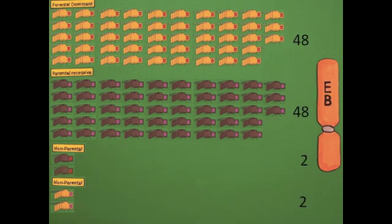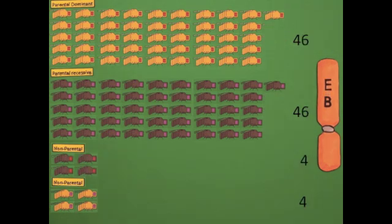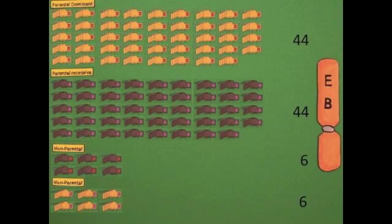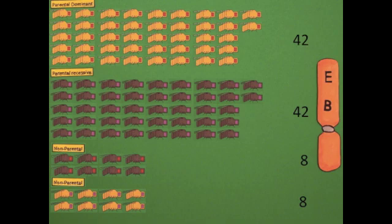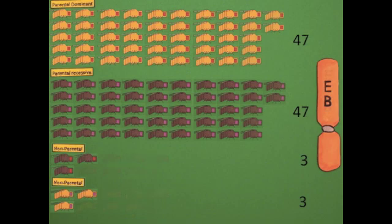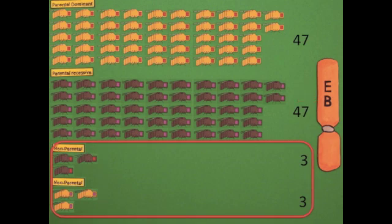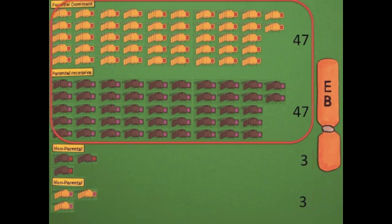The likelihood of a crossover between the genes increases with distance. So the farther any two linked genes are from one another, the greater the number of non-parentals compared to parentals. Since there is a direct correlation between gene proximity and non-parentals, we can use the proportion of non-parentals to parentals to calculate an approximate distance between two linked genes.